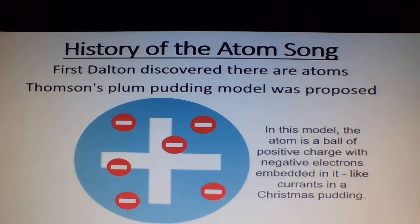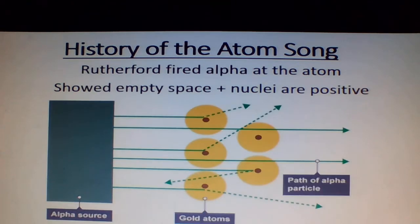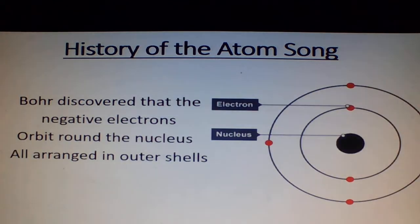Stolter discovered there are atoms. Dobson's plum pudding model was composed. Rutherford fired alpha particles at the atom, which showed empty space and that nuclei are positive. Bohr discovered that the negative electrons orbit round the nucleus.